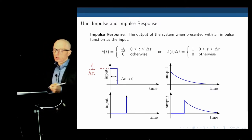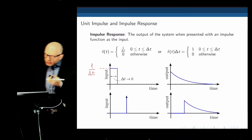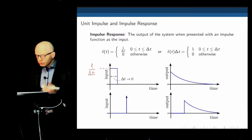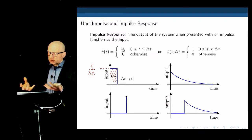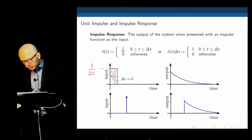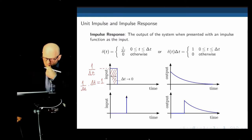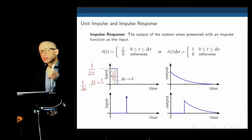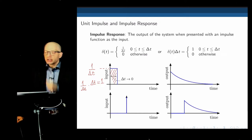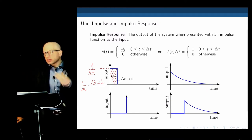Now we are getting something that is normalized — the area under this curve, which is the height times the base, gives us one. When you make delta T tend to zero, theoretically the pulse should tend to infinity, but for a very small non-zero value of delta T, the area under that curve is always one. That's why it is called the unit impulse — it is the most primitive mathematical function that can describe the simplest input we can apply to a system.